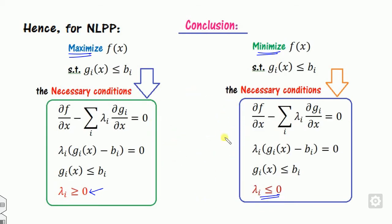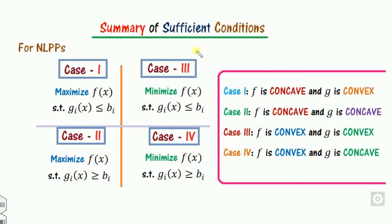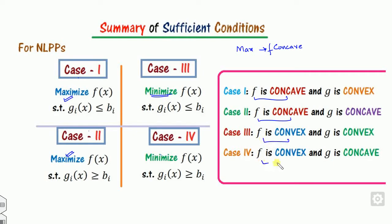We will see how to write the necessary conditions in terms of numerical examples. The summary of the sufficient condition is that there may be four kinds of nonlinear programming problems: maximization or minimization with constraints of less-than or greater-than sign. For a maximization problem, you must prove the function is concave. You can prove convexity or concavity using the Hessian matrix or the eigenvalue concept, discussed in previous videos.